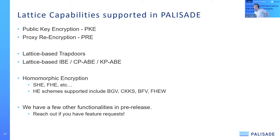We have a number of lattice capabilities supported in Palisade. At its heart, everything is public-key crypto (PKE). We also make extensive use of proxy encryption and have further out lattice-based trapdoor schemes, including identity-based encryption and attribute-based encryption. We're probably most famous for our support of various homomorphic encryption protocols, both somewhat homomorphic and fully homomorphic. We have general support for BGV, CKKS, BFV, FHEW, and historic support for some older schemes also. We do engage as much as possible with our community.